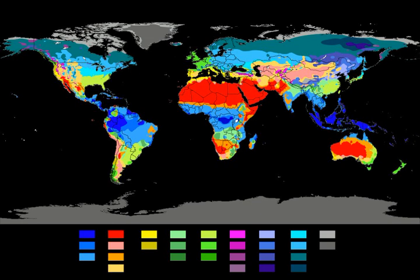The Köppen climate classification divides climates into five main climate groups, with each group being divided based on seasonal precipitation and temperature patterns. The five main groups are A tropical, B dry, C temperate, D continental, and E polar. Each group and subgroup is represented by a letter. All climates are assigned a main group; all climates except those in the E group are assigned a seasonal precipitation subgroup. For example, AF indicates a tropical rainforest climate.